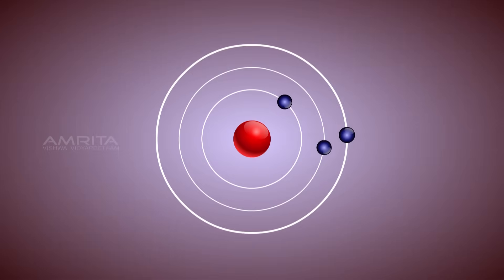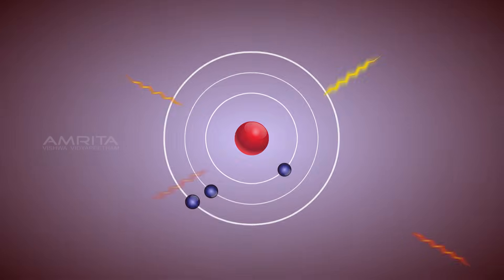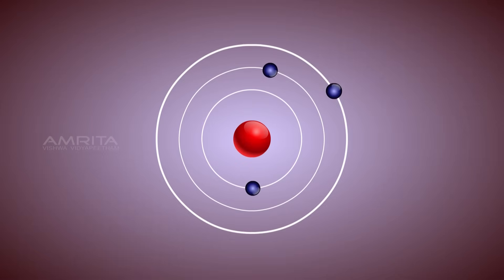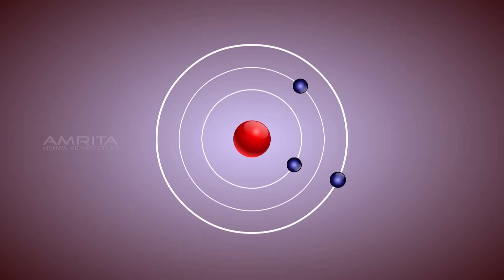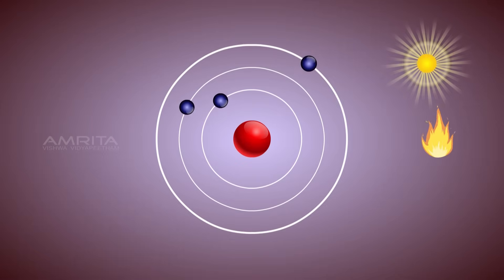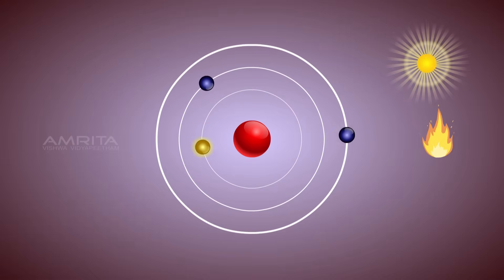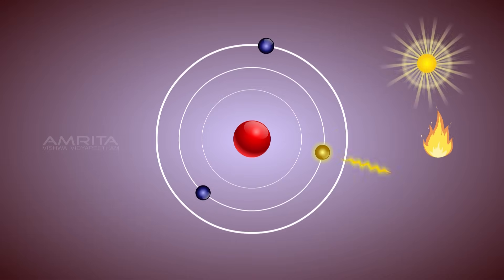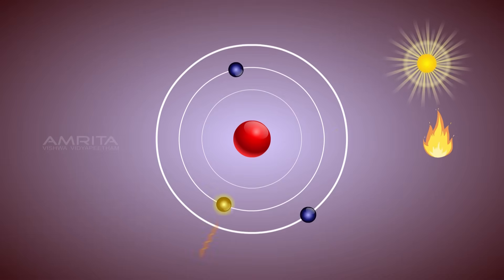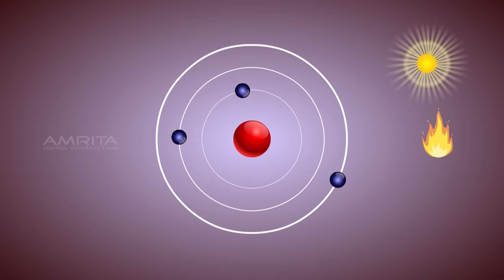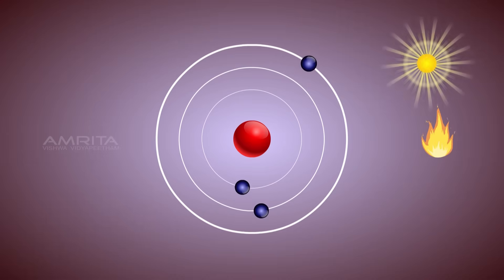Does an electron radiate energy by itself? Since electrons move in a particular orbit, they do not radiate energy by themselves. What happens instead is when an atom absorbs energy, the electrons get excited and jump into the next higher energy level. The electron can then radiate energy and return to its original state or drop down to the next energy level.